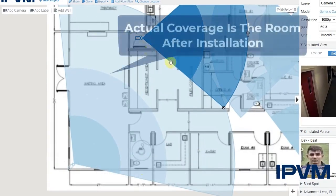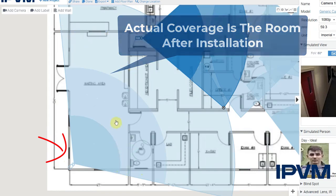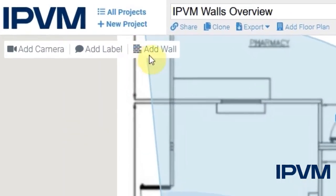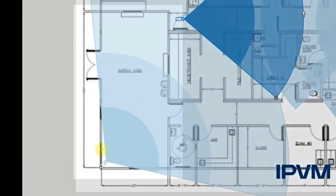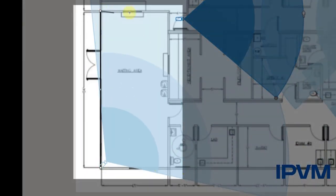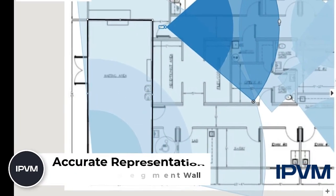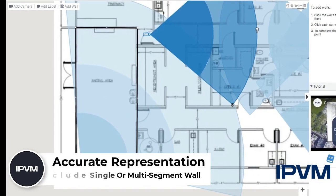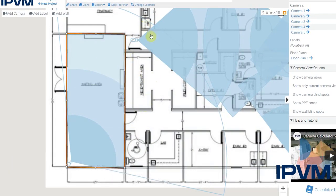For example, this camera here covers a very wide range, but in reality it's just going to be covering this single room. We've added a feature called 'Add Wall', which allows you to click and click again, and we can create single or multi-segment walls on the floor plan, which will more accurately represent the coverage area of a specific camera.